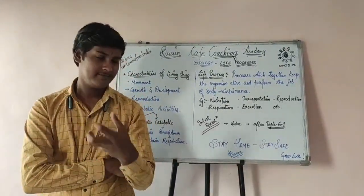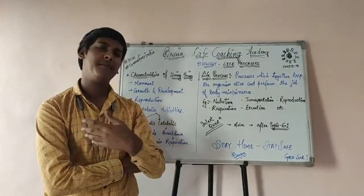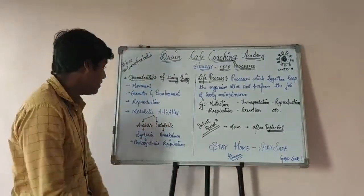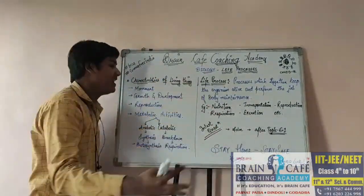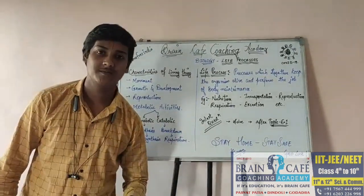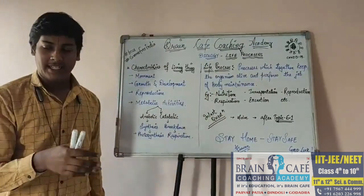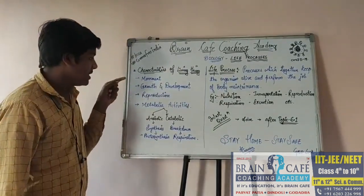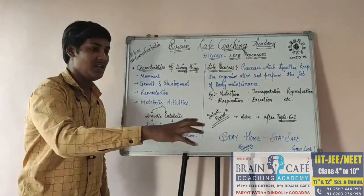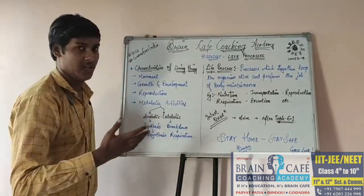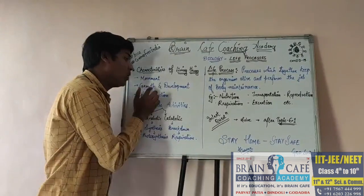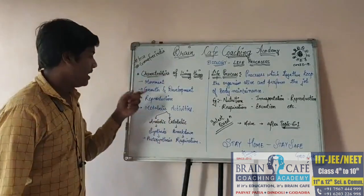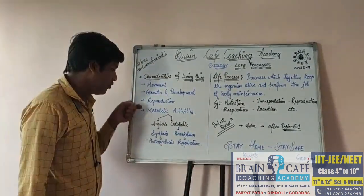Sir, plants are stationary. So if you say plants are living, is it possible? The question is, if you say movement is a characteristic of living things, then plants would be excluded. But plants grow and that is the reason plants are also living — it has to be a living organism. The second characteristic is growth and development. Reproduction — it means organisms give rise to new organisms of their same kind.